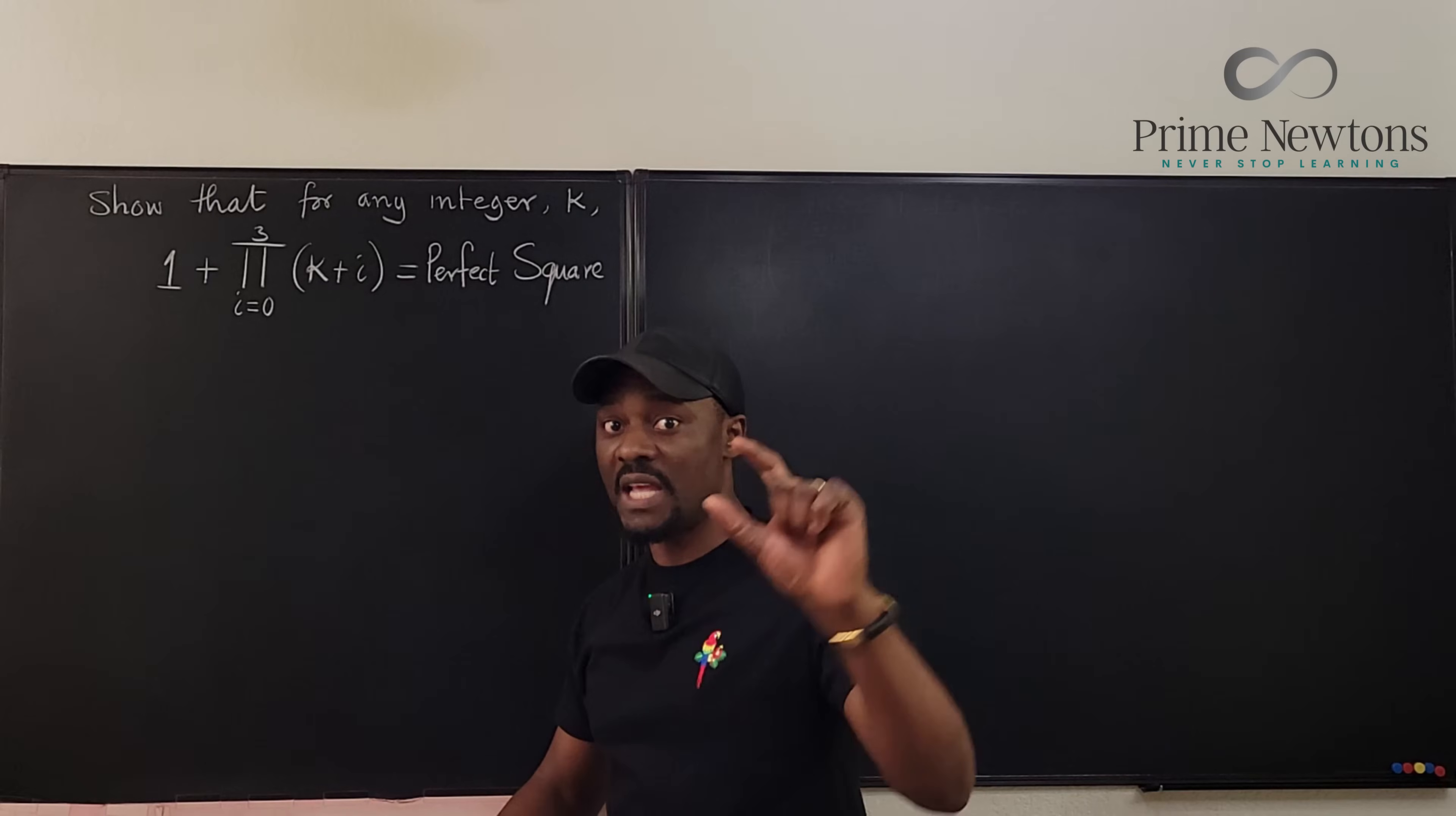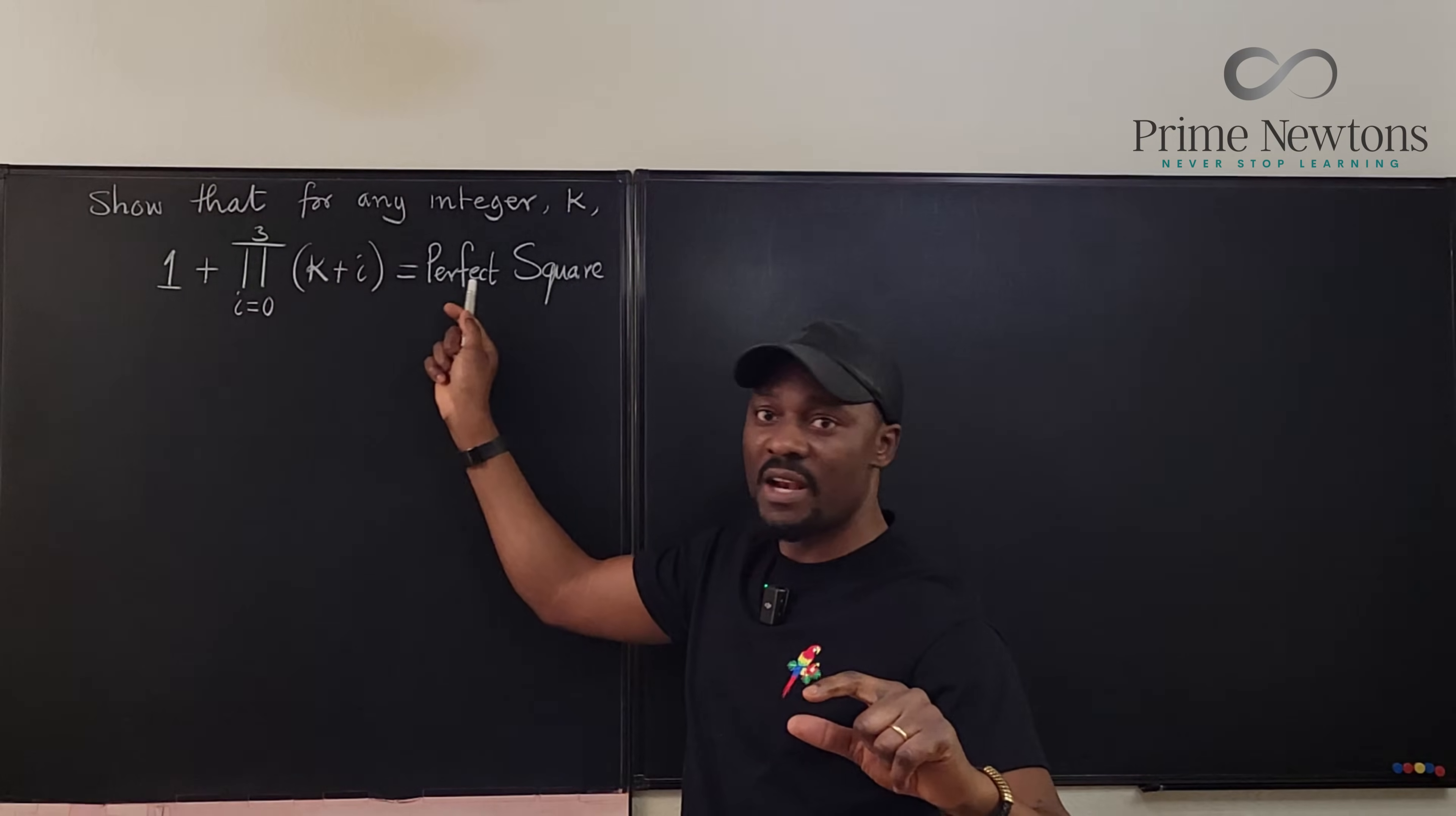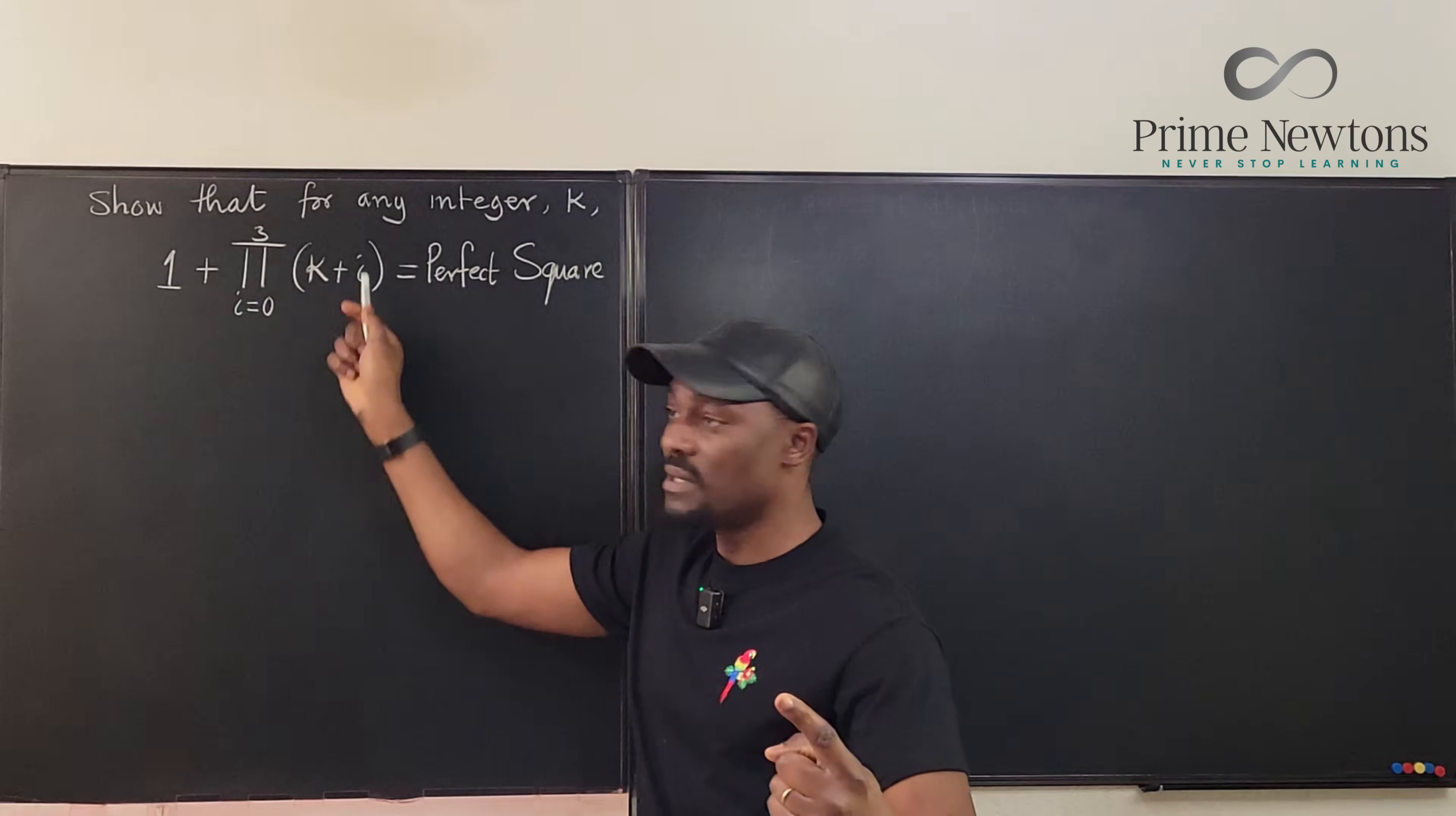It doesn't matter what integer you pick, if you add 1 to this, you're going to get a perfect square. So the first challenge is, what does this mean?